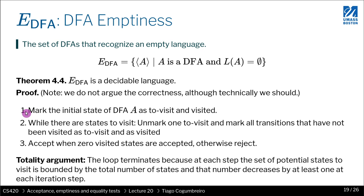First one, if you find one that is accepting, then you reject. Say no. The DFA will accept something, so it's not empty. And if you go over all states and none of them are accepting, then the whole thing is empty. Reject all strings.